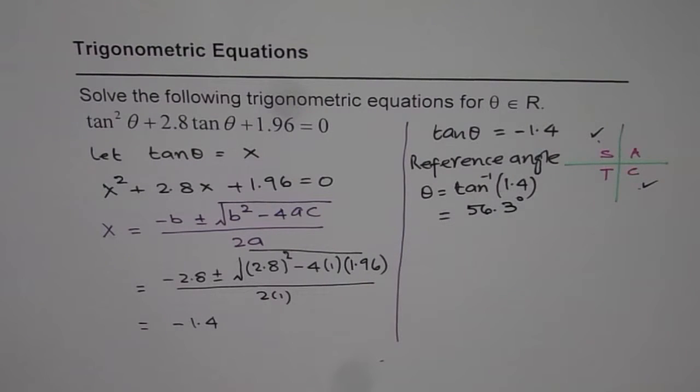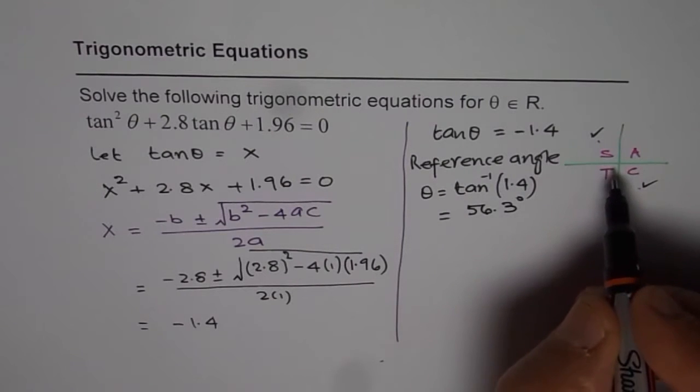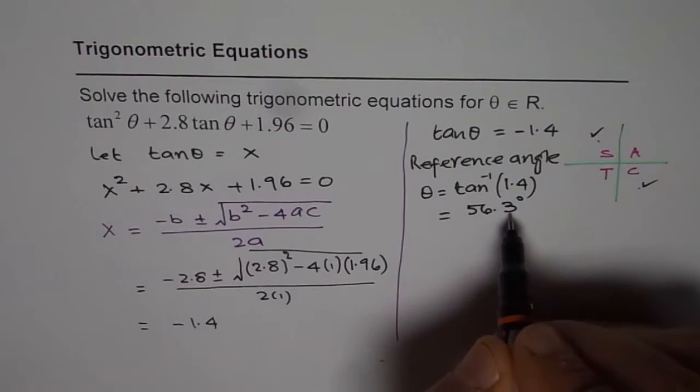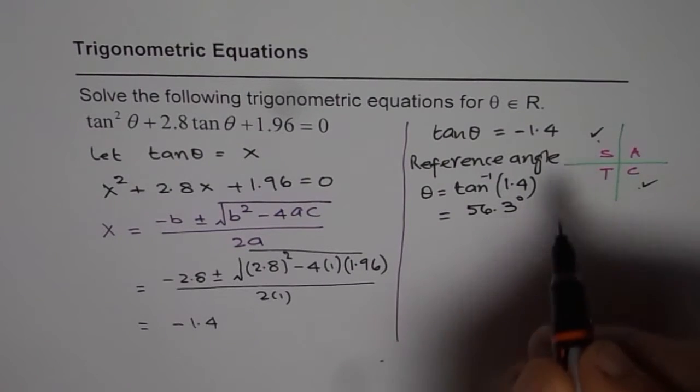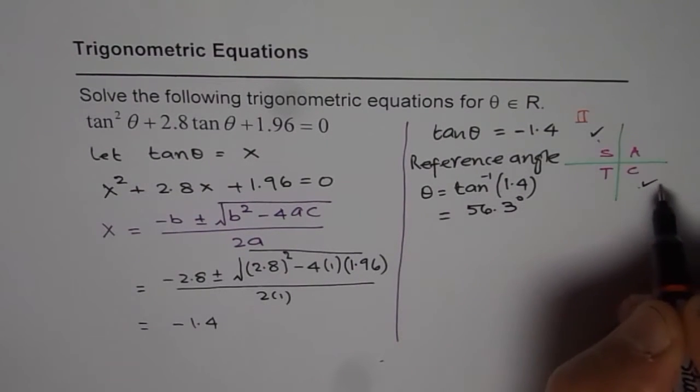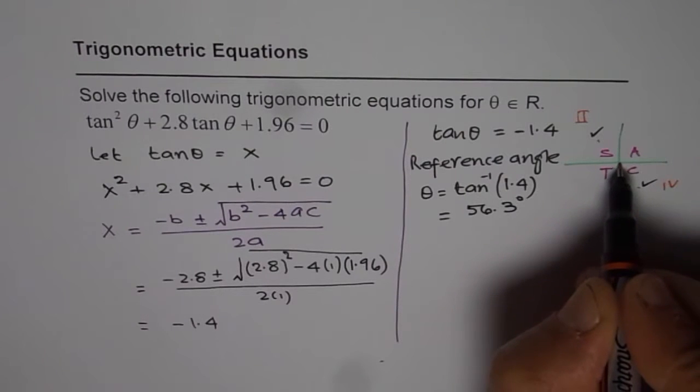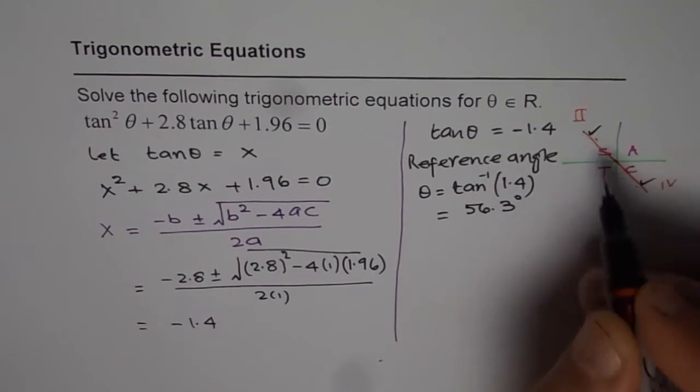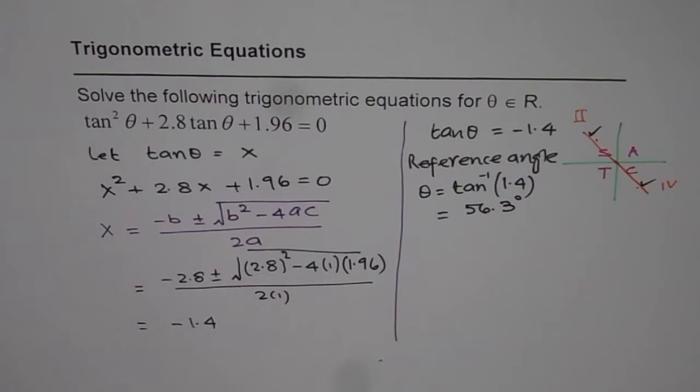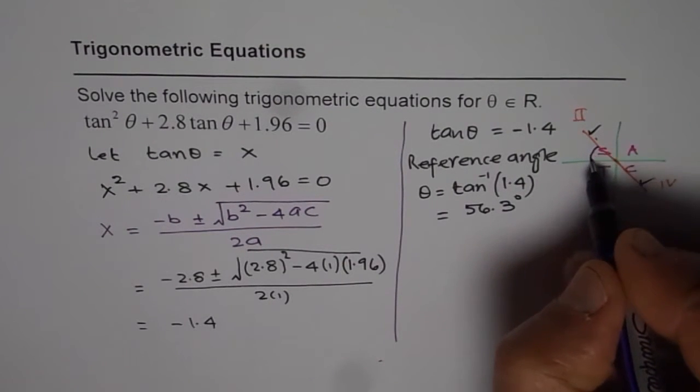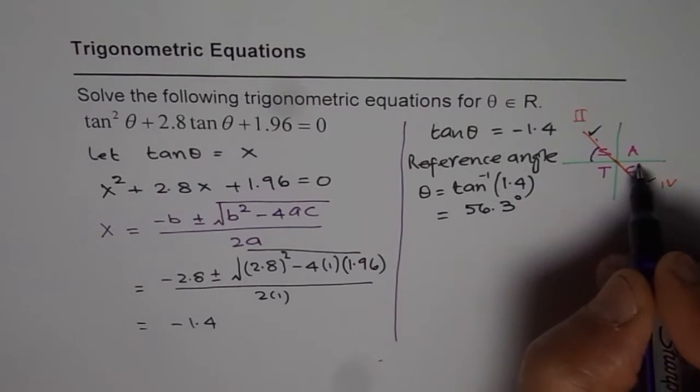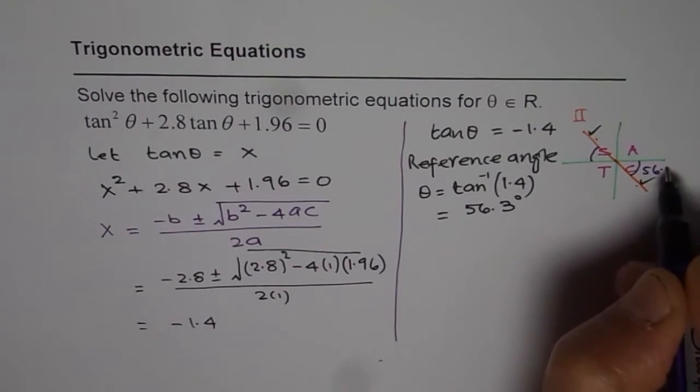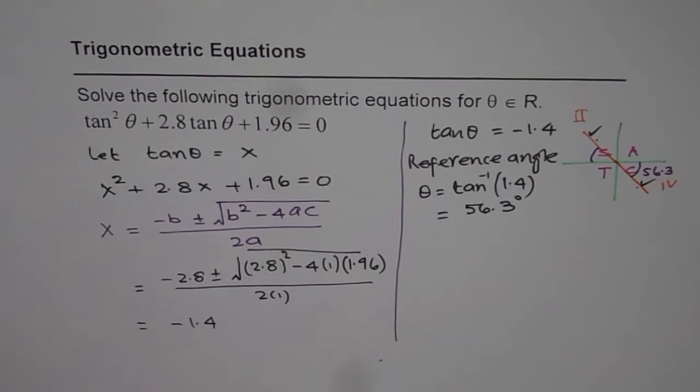So we get 56.3 degrees. So that's the angle. Now this is not the answer. This is just related acute angle. It really means that from horizontal the angle is 56.3 and we are in quadrant 2 or in quadrant 4. So you could make the angle kind of like this. So here what we know is that this angle is 56.3, the reference angle.